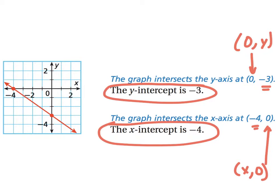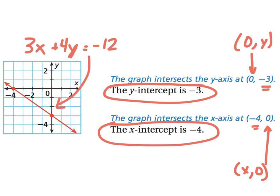Just for your information, the formula for this red line is three x plus four y equals negative twelve — that's the standard form for this line. We can use this to our advantage. I want you to see how we can quickly figure out the y-intercept without looking at the graph. The trick is to plug in zero for the x-coordinate and solve for y.